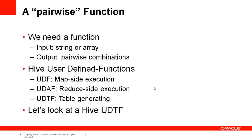Hive provides three different types of user-defined functions. UDFs, which run on the map side and only consider single rows. UDAFs, which account for reduce-side execution and require logic around partial aggregation. And finally, UDTFs, which produce multiple rows of output for a single row of input. We'll need to write a UDTF.